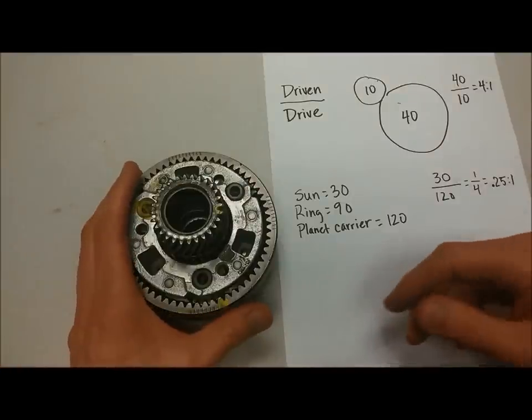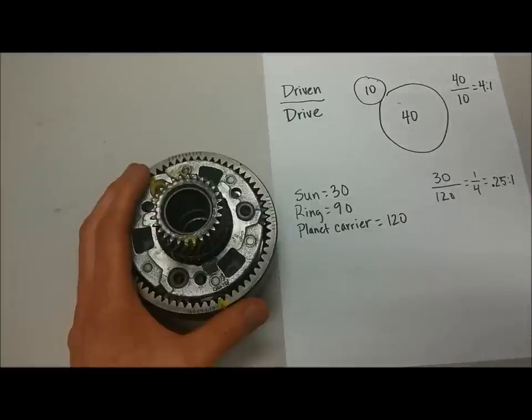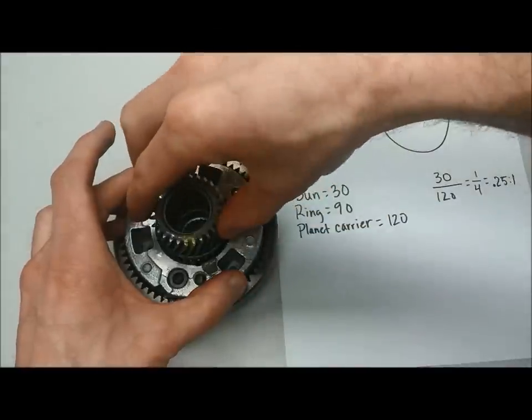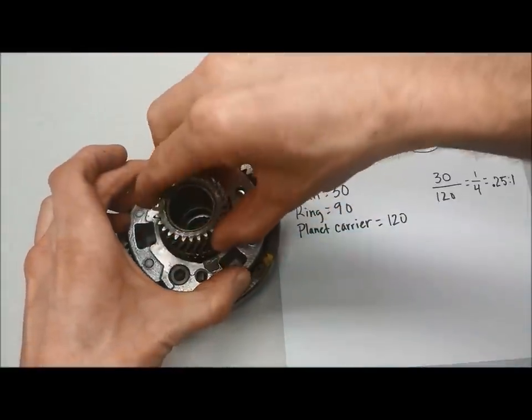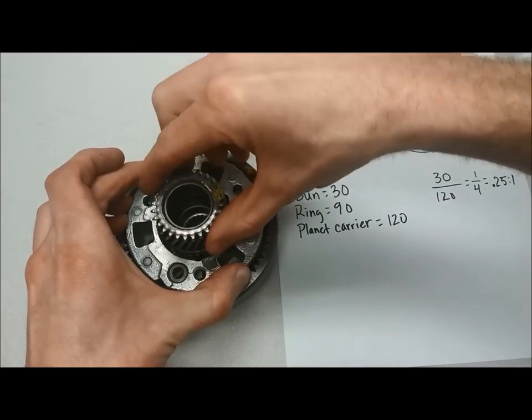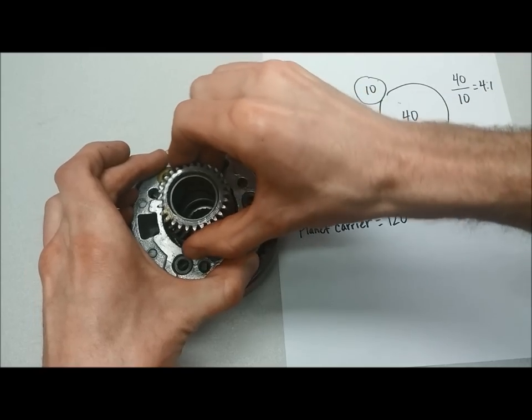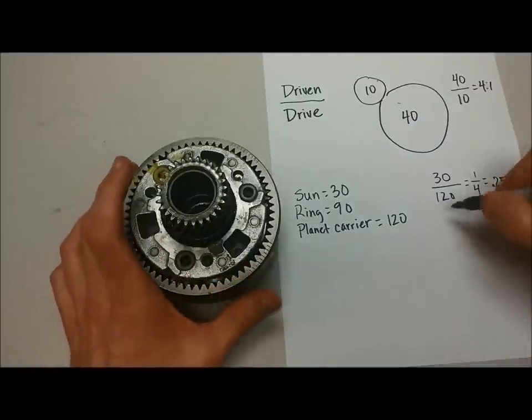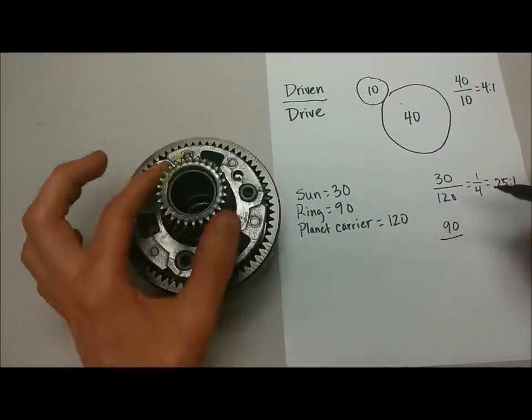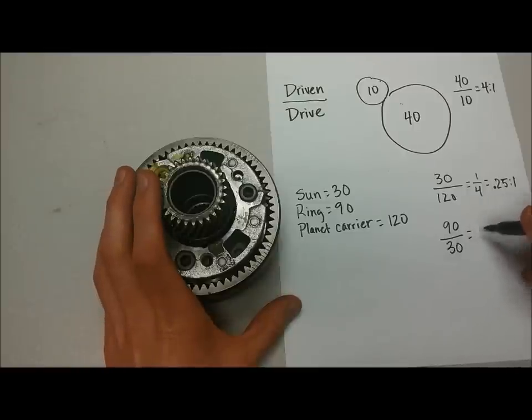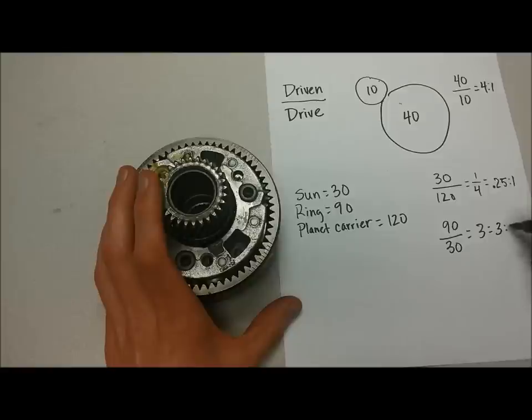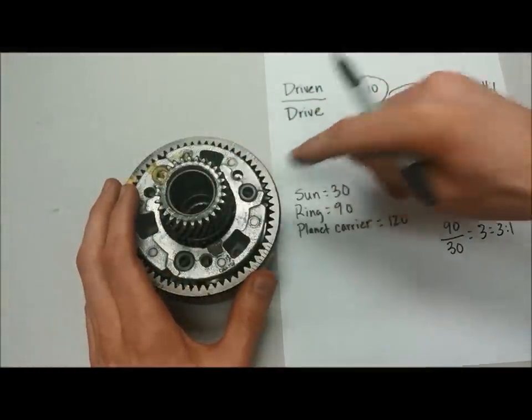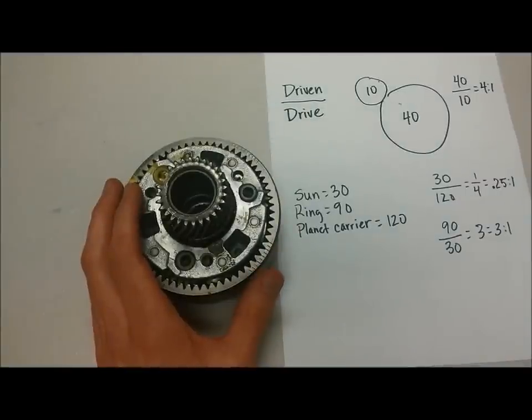If I wanted to give you one more example, let's say that we are going to hold the carrier stationary, and I'll turn the sun gear. You can see that is reversed. The ring gear is going in the opposite direction. But now the drive gear is the sun gear. The driven gear is the ring gear. So driven is the ring gear, which is 90. Drive gear is the sun gear, which is 30, which equals 3, or a 3 to 1 gear ratio. So the sun gear would have to turn three times for the ring gear to turn once. That's how you calculate a gear ratio on a planetary gear set.